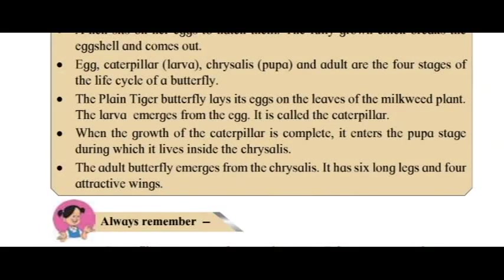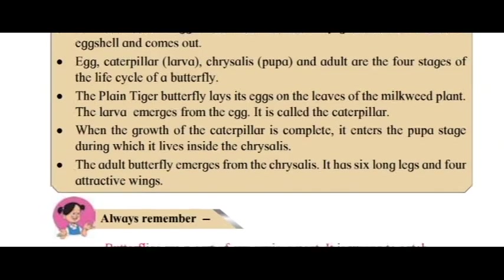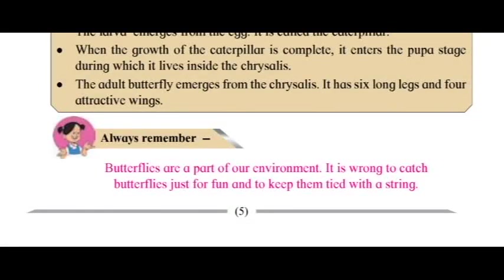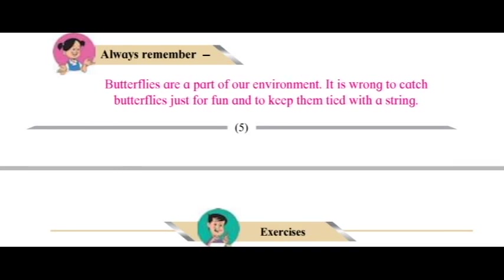The plain tiger butterfly lays its eggs on the leaves of the milkweed plant. The larva emerges from the egg and is called the caterpillar. When the growth of the caterpillar is complete, it enters the pupa stage, during which it lives inside the chrysalis. The adult butterfly emerges from the chrysalis with six long legs and four attractive wings. Always remember: butterflies are a part of our environment, and it is wrong to catch butterflies just for fun or to keep them tied with a string.